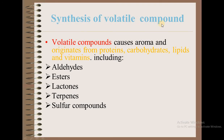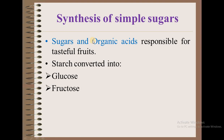Next is synthesis of volatile compounds. Volatile compounds cause aroma and originate from proteins, carbohydrates, lipids, and vitamins, including aldehydes, esters, lactones, terpenes, and sulfur compounds. These volatile compounds give aroma to the fruits.